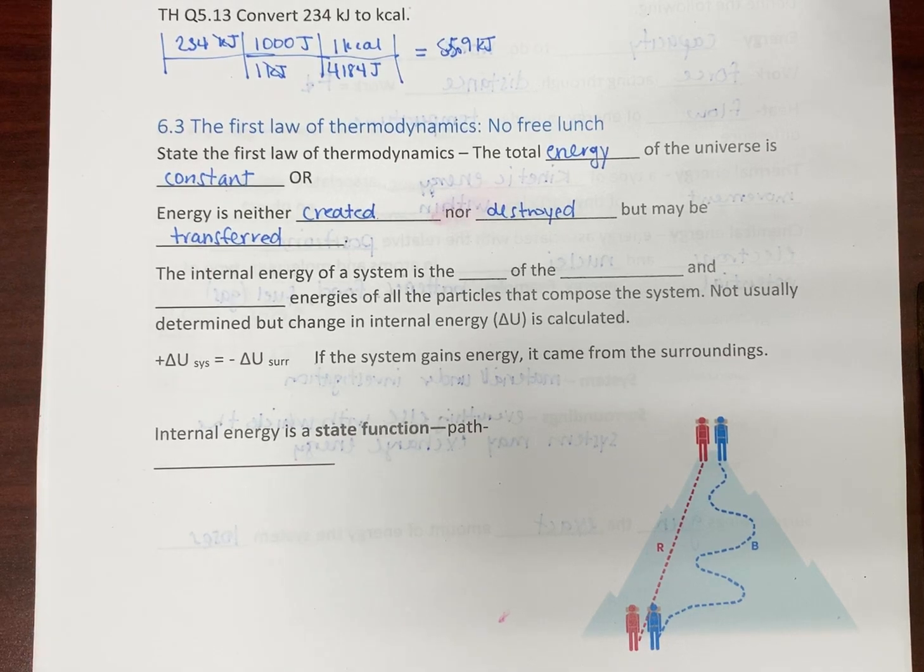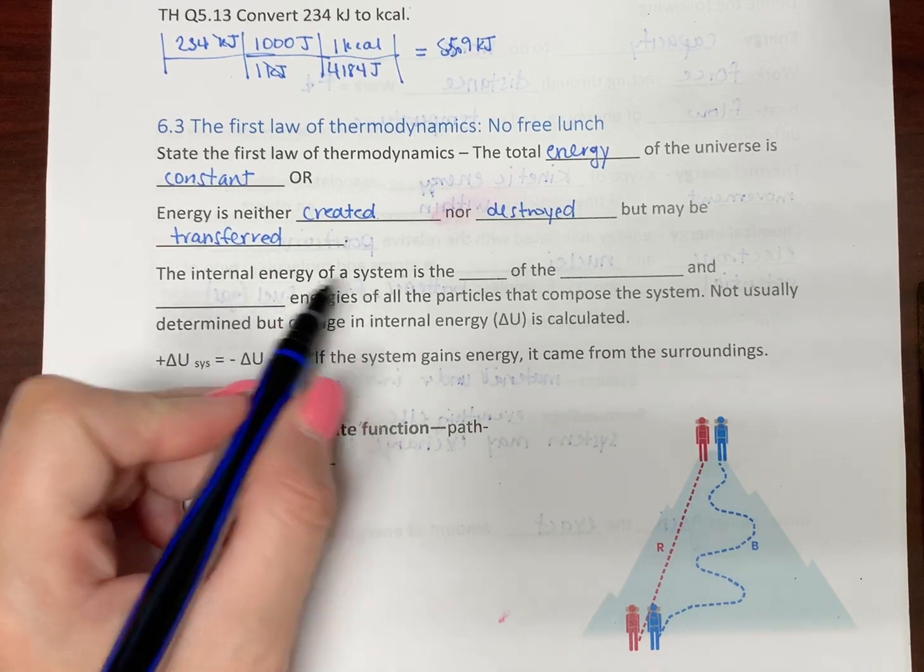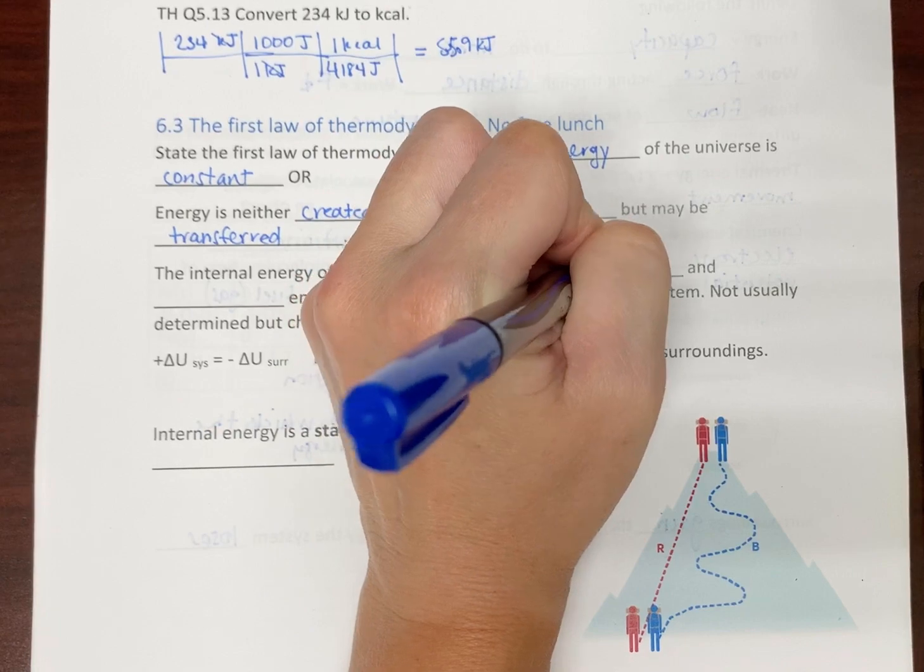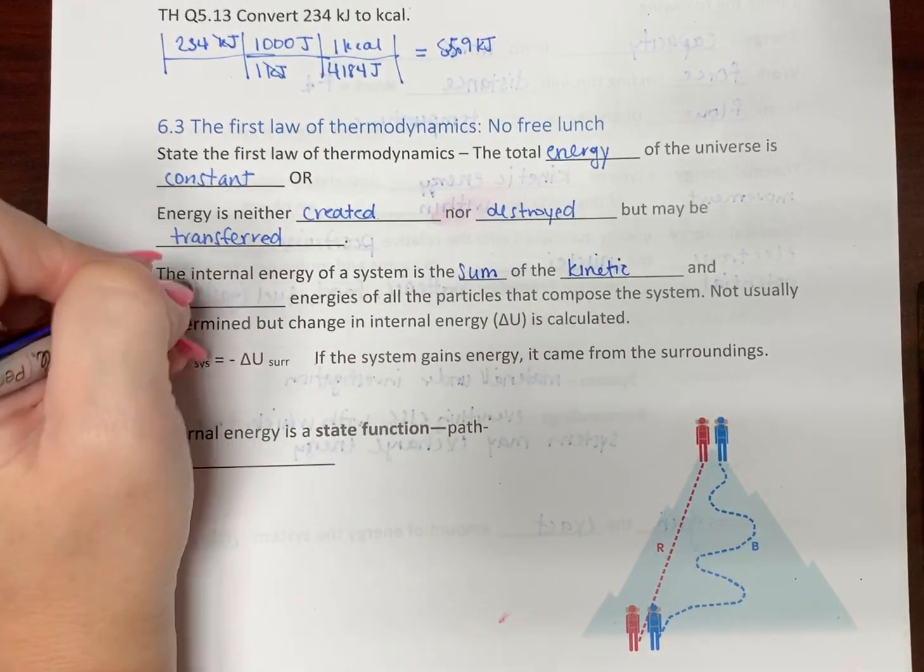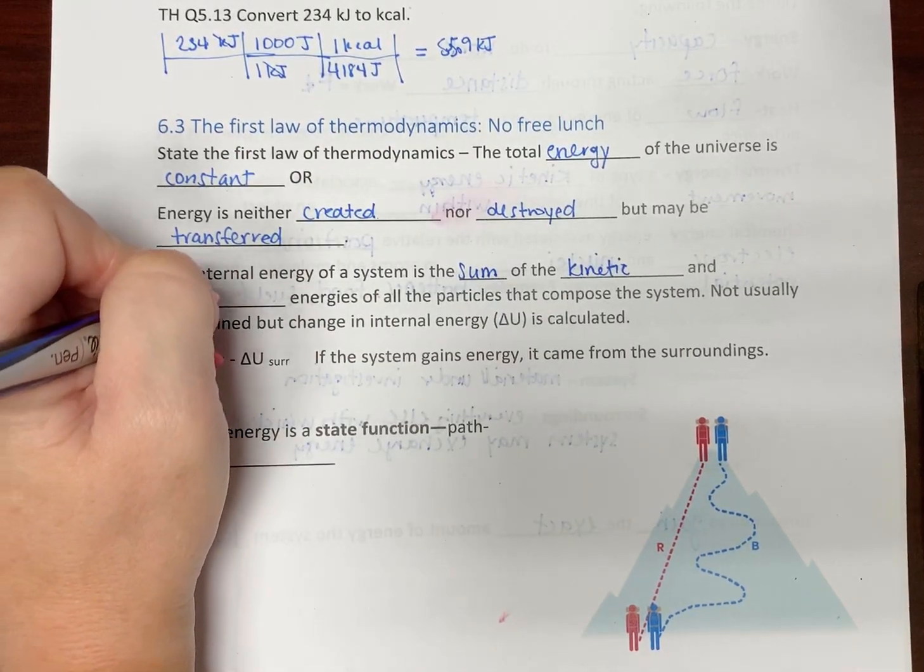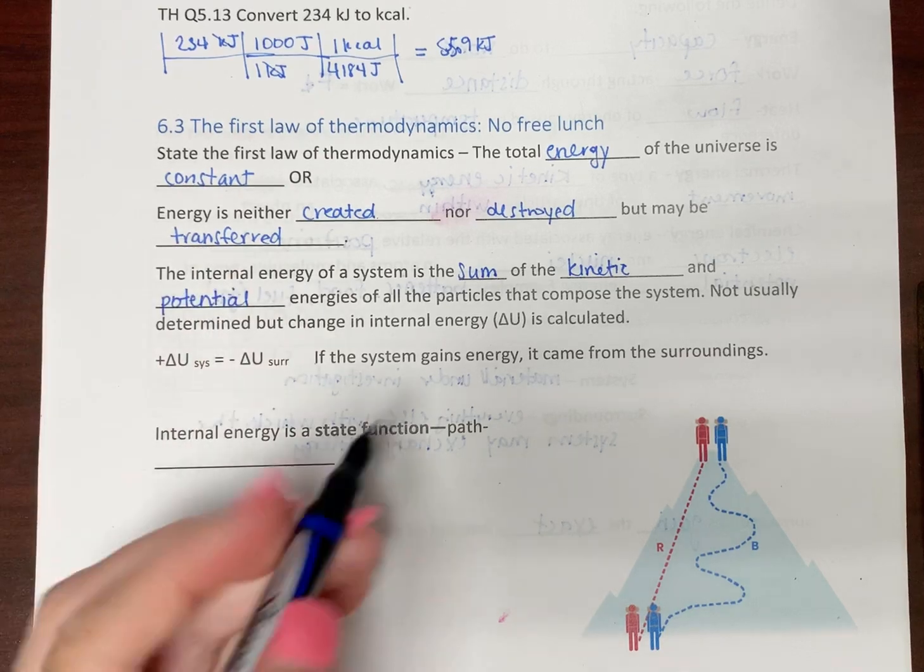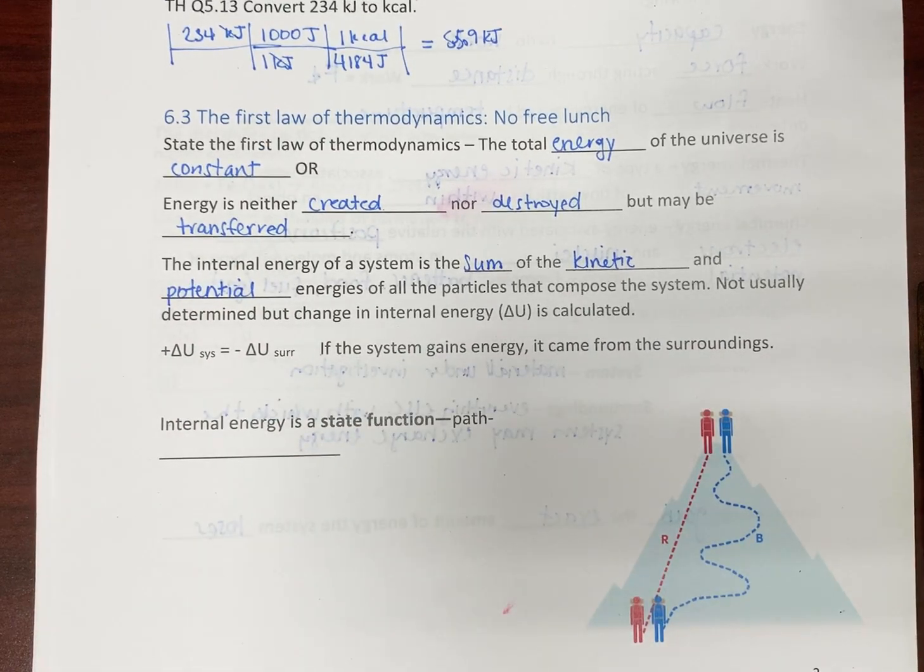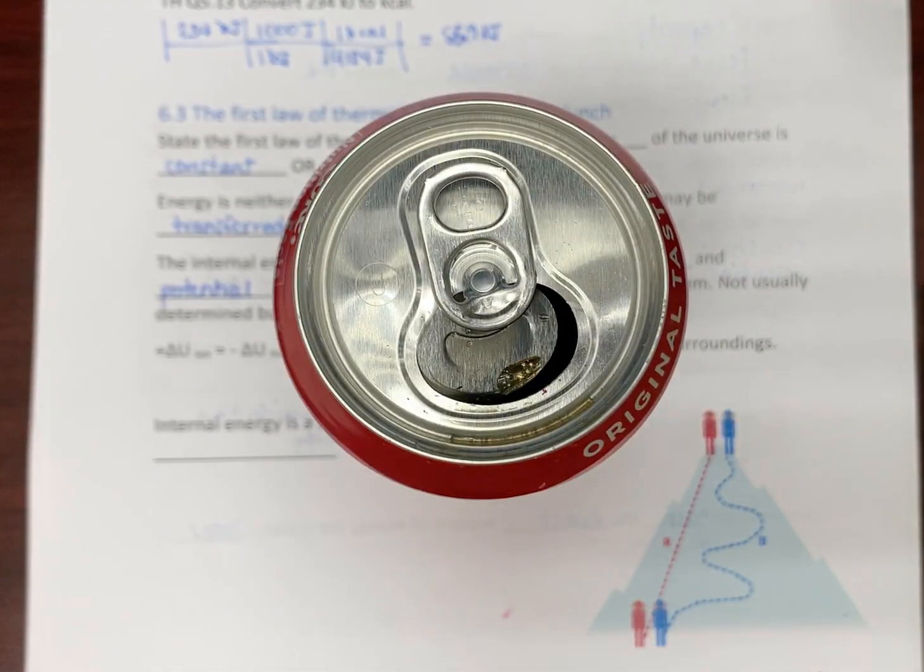Now, the internal energy of a system, so that's going to be the energy within the system, is the sum of the kinetic, so that's energy of motion, and potential energy of all the particles within the system. So, I'm caffeinated. So, this is my can of Coca-Cola.